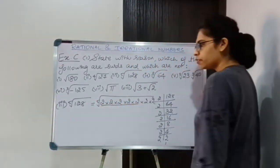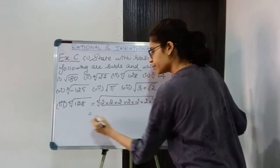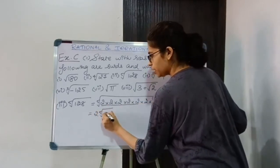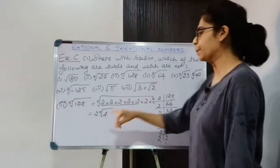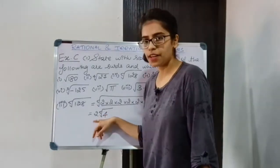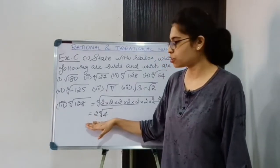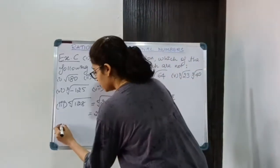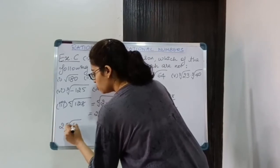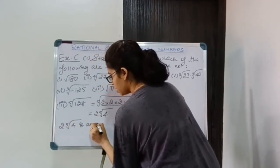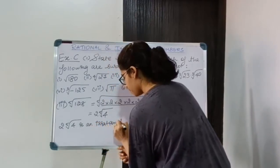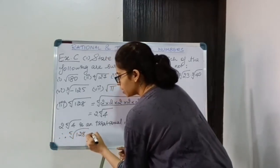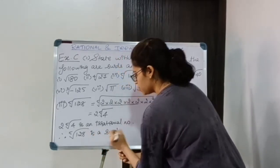Out of the seven 2's, I will group 5, because I have a 5th root. The 5th root of 2⁵ gives 2 outside, and the remaining two 2's stay inside. So the result is 2·⁵√4. This is an irrational number, and inside the root I have a rational number. So yes, it is a surd. Therefore, ⁵√128 is a surd.